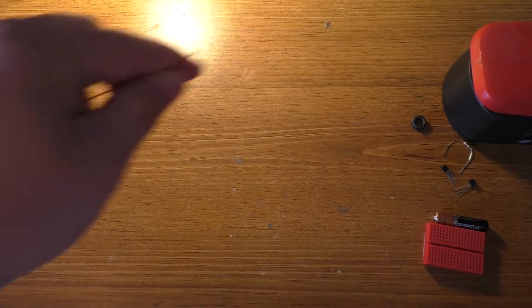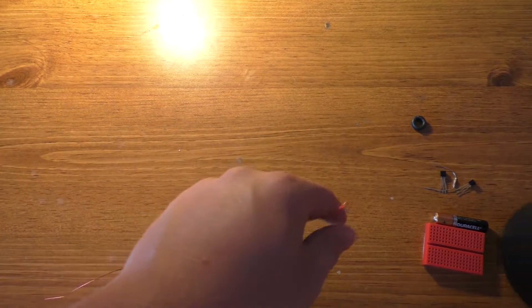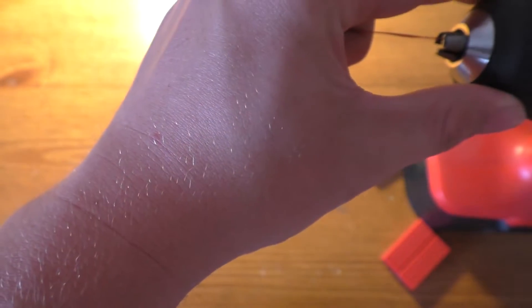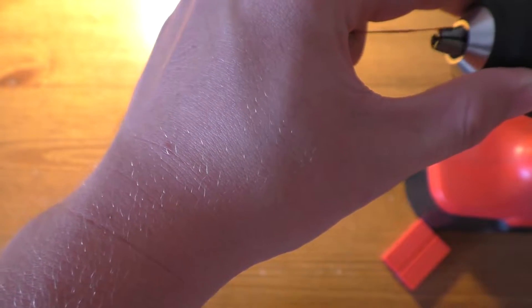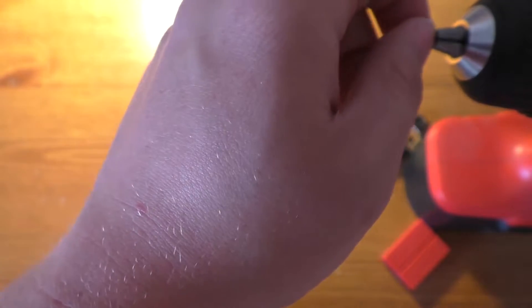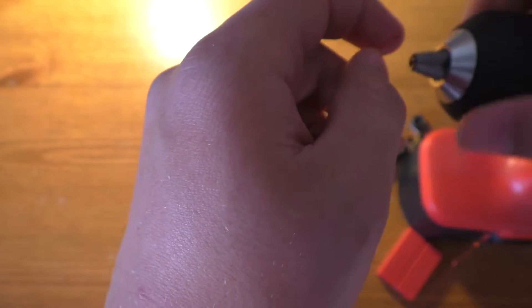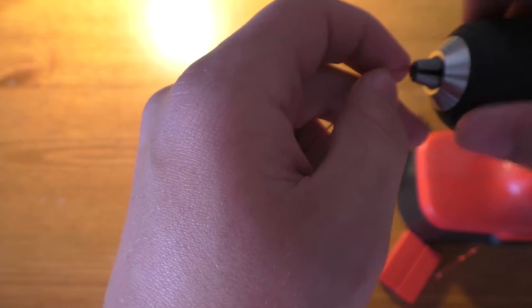And then come down here, keeping them even this entire time, and then just put a bend in this end. Now, optionally, one of the things that you can do to make this a little bit easier, is if you take a drill and you stick the wire into the chuck of the drill.